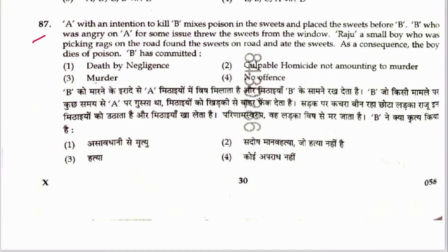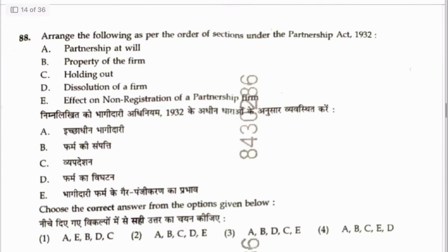Question 87: A, with an intention to kill B, mixes poison in a sweet and places it before B. B, who was angry at A, throws the sweets from the window. Raju, a small boy picking rags on the road, found the sweet, ate it, and died of poison. What has B committed? Question 88: Arrange the following as per order of sections under the Partnership Act — Section 7 (partnership), Section 14 (property of firm), Section 28 (holding out), Section 39 (dissolution of firm), Section 69 (effect of non-registration). Sequence is A, B, C, D, E. Answer is 2.